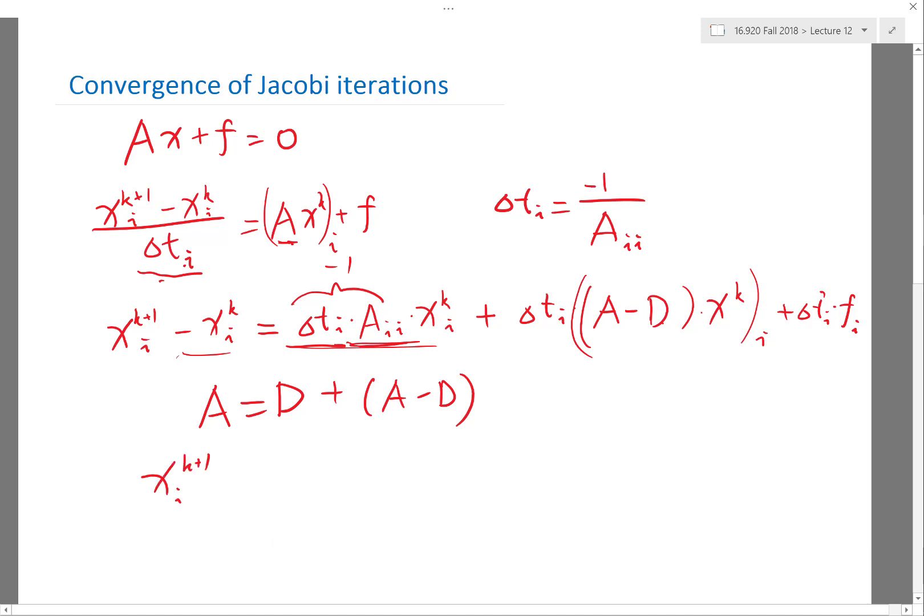At the end I have x^(k+1)_i would be equal to just the off-diagonal entries: (minus 1 over a_ii) times (A minus D) times x^k_i, plus again minus 1 over a_ii of f_i. Alright, does it make sense?